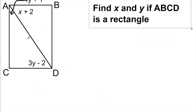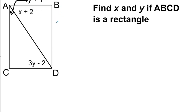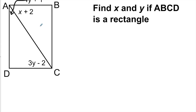Next problem: I need to find X and Y if ABDC is a rectangle. Remember, let's take a look at the rectangle property. Where are X and Y — are they parts of angles or parts of sides? They're parts of angles. What do we know about the angles of a rectangle? They are all 90 degrees.